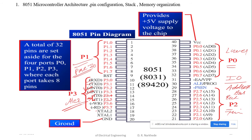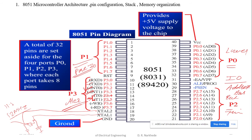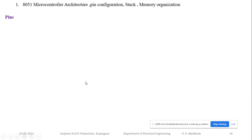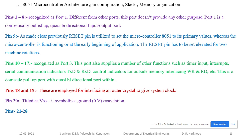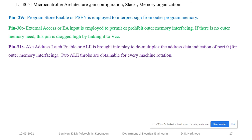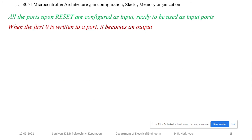Pins 18 and 19 are used to connect the external oscillator circuit - the external crystal oscillator. The oscillator circuit is inbuilt but the crystal must be placed externally. The oscillator is 12 MHz or exactly 11.0592 MHz. Pins 29, 30, and 31 are normally used for external memory interfacing.